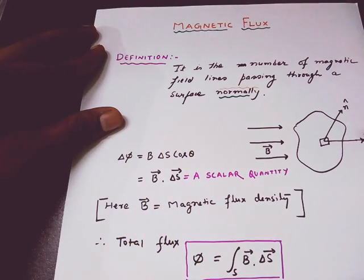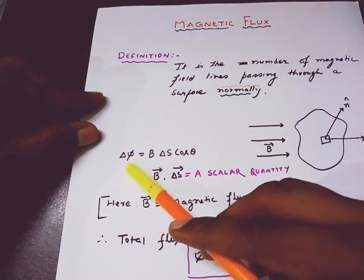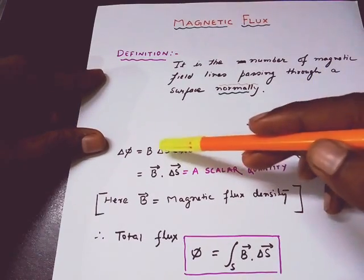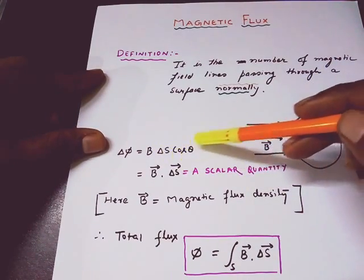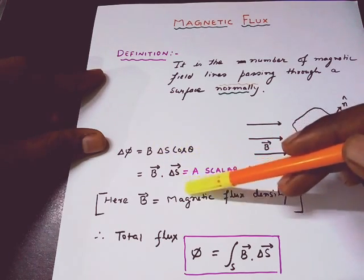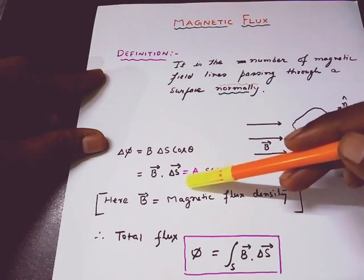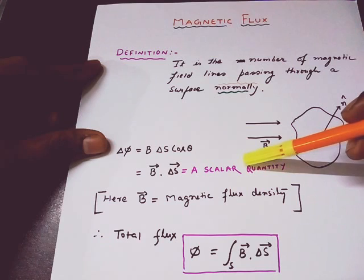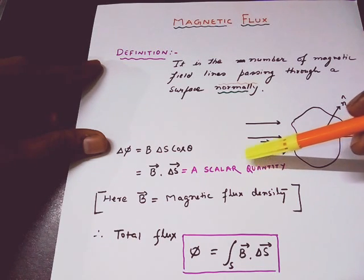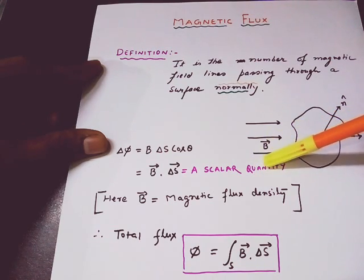As the flux is very small, I am using the term dΦ. So dΦ = B · dS cos θ. We can also write this expression as B dot dS, so it is actually a dot product. You know very well that the result of a dot product is a scalar quantity.